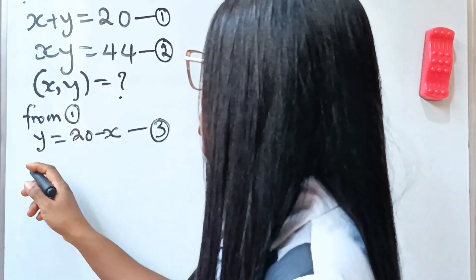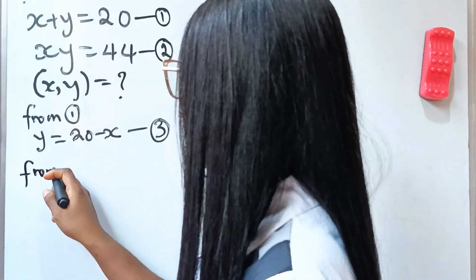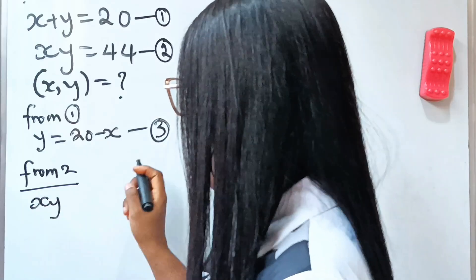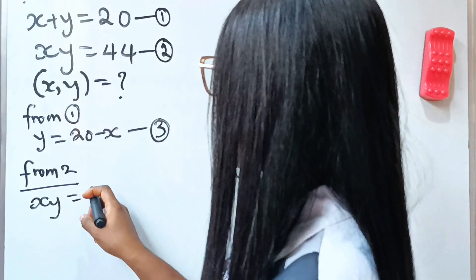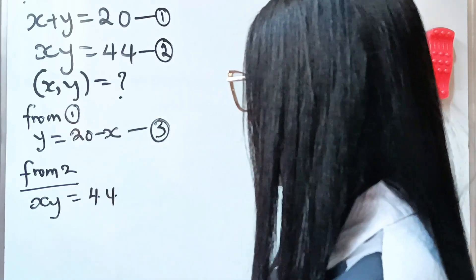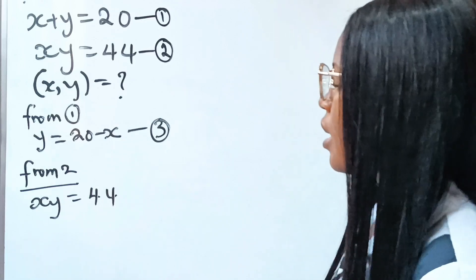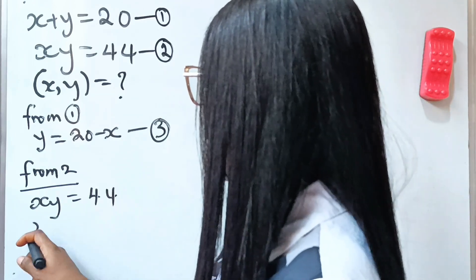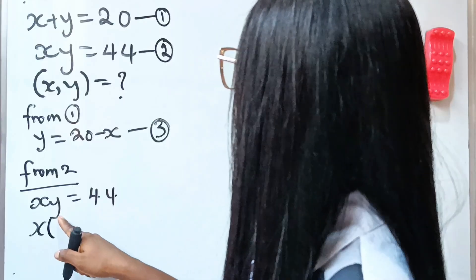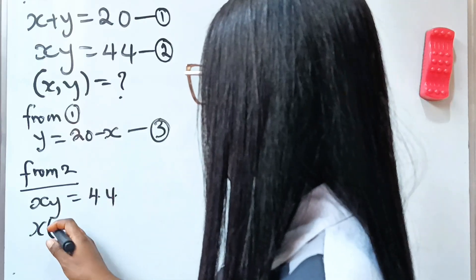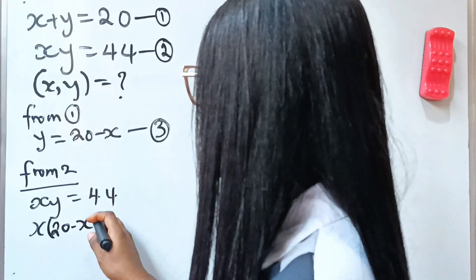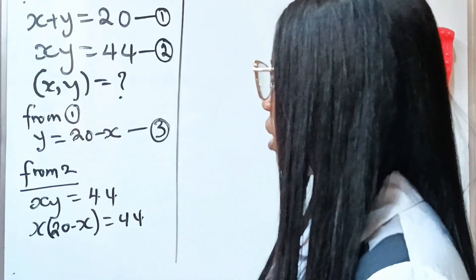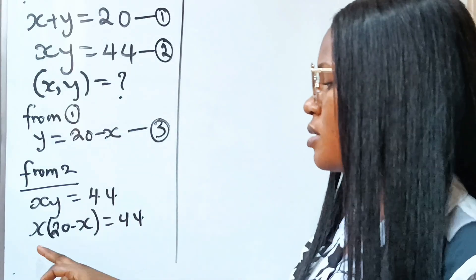From equation 2, x multiplied by y is equal to 44. Now we can say that x multiplied by — and our y is 20 minus x — so x multiplied by 20 minus x is equal to 44.